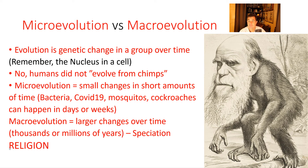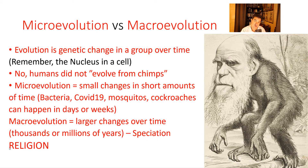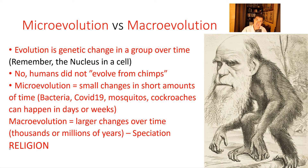With microevolution, we're talking about small changes in relatively short amounts of time. This occurs in bacteria, COVID-19, mosquitoes, cockroaches — organisms that reproduce quickly, where changes can happen in days or weeks, allowing us to actually measure how much genetic change and evolution is occurring. With macroevolution, you accumulate larger changes over longer periods — thousands or millions of years — relying on things like the fossil record, and potentially leading to speciation.